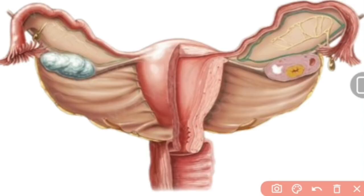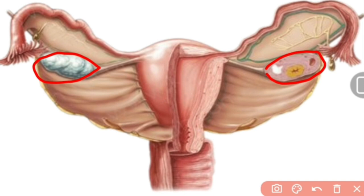From the figure we can see the gross surface of the ovary showing the tubal end and the uterine end. It attaches to the uterus via the ligament of the ovary. The anterior or mesovarian border attaches to the posterior border of the broad ligament.